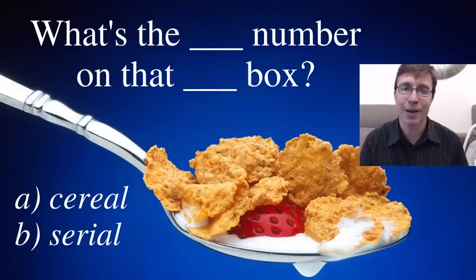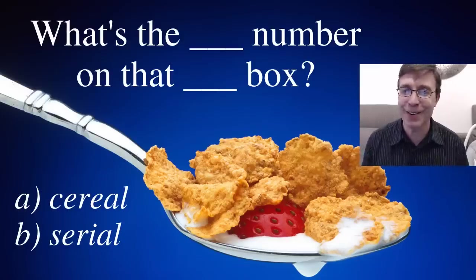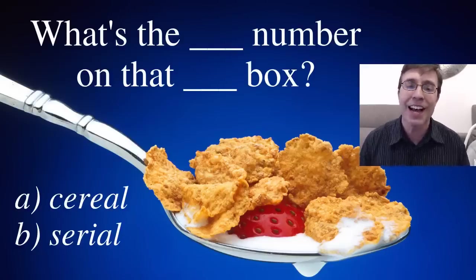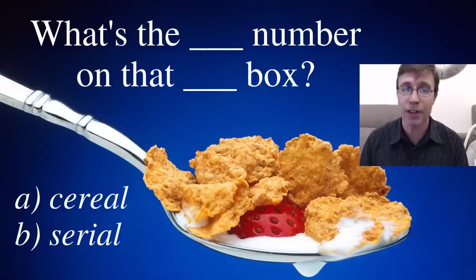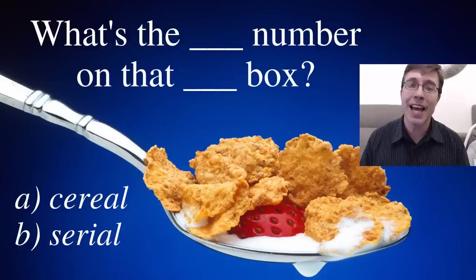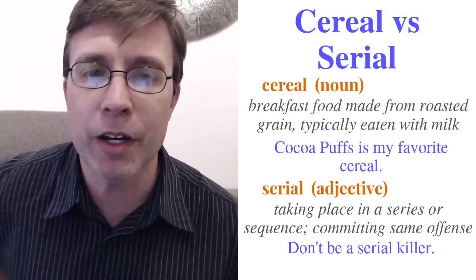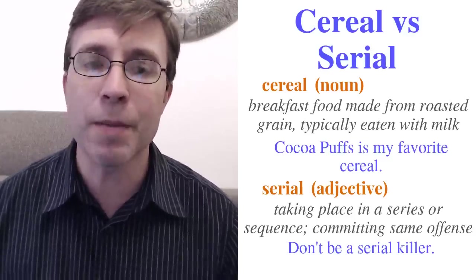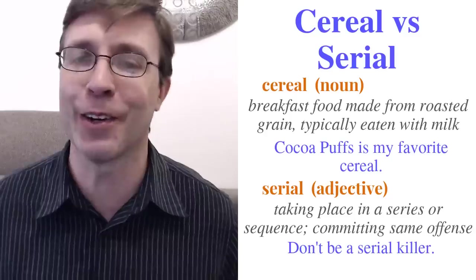The answer: 'What's the serial B number on that cereal A box?' They're homonyms — spelled differently. Cereal, C-E-R-E-A-L, is a noun — a breakfast food. Many people eat it with milk. My favorite cereal is Cocoa Puffs. What's your favorite cereal? Serial, S-E-R-I-A-L, is an adjective talking about taking place in a sequence. A serial number is a sequence of numbers. It also means committing the same offense repeatedly — like a serial killer in crime shows, referring to somebody who commits multiple crimes.